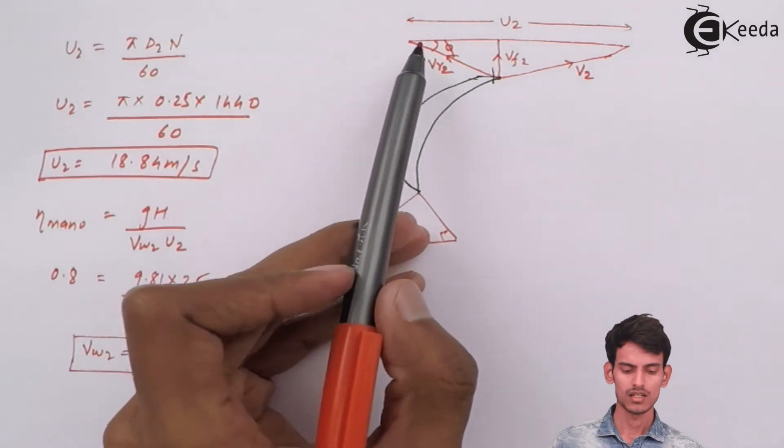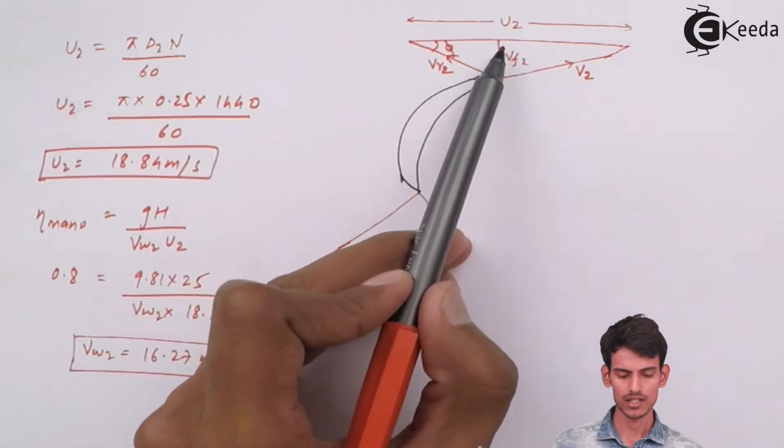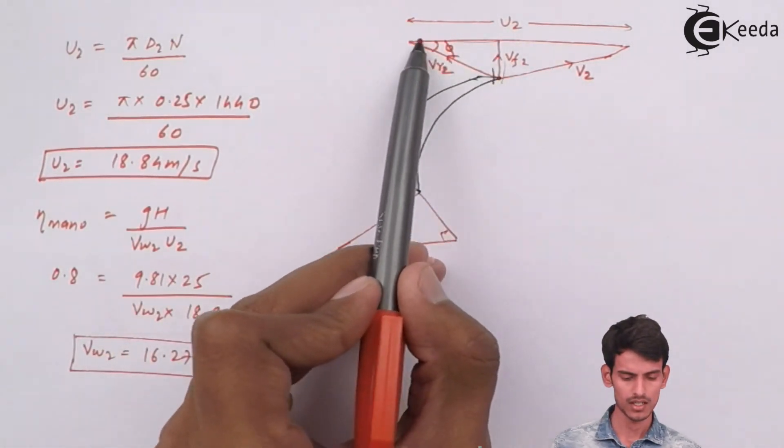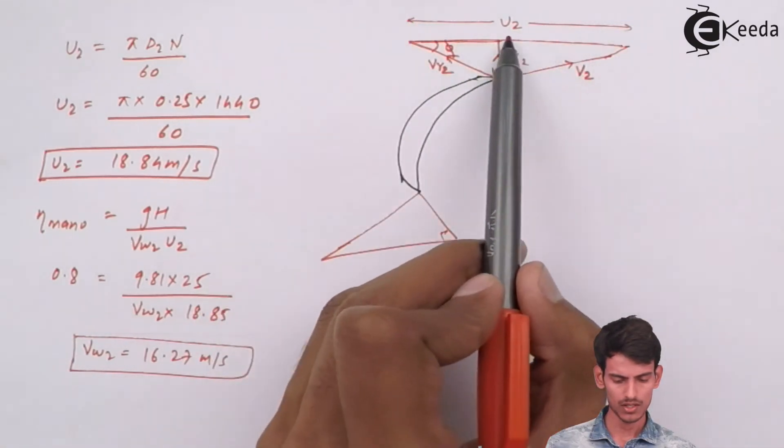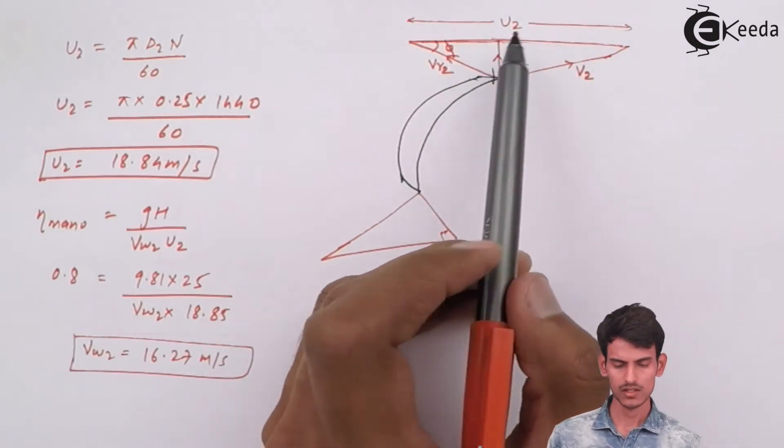In this triangle, tan phi is opposite side, that is Vf2, upon the adjacent side. The adjacent side is nothing but u2 minus Vw2.